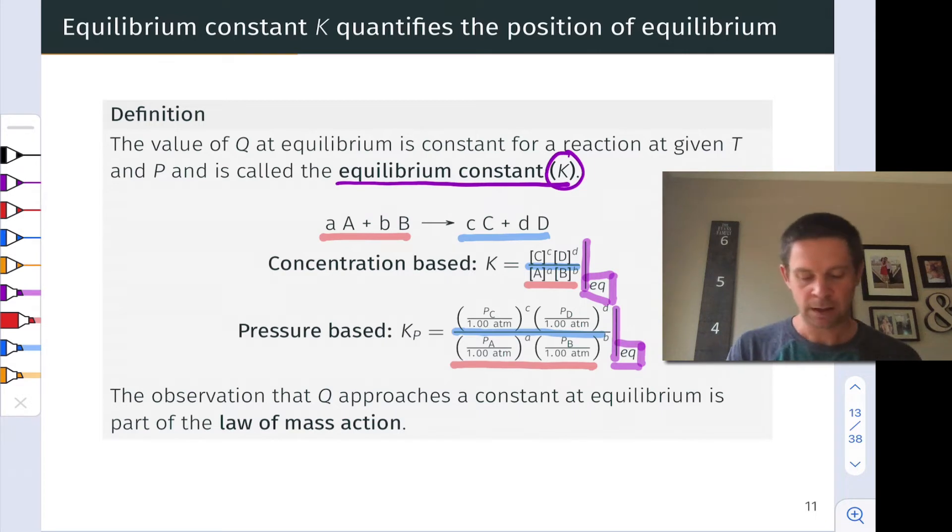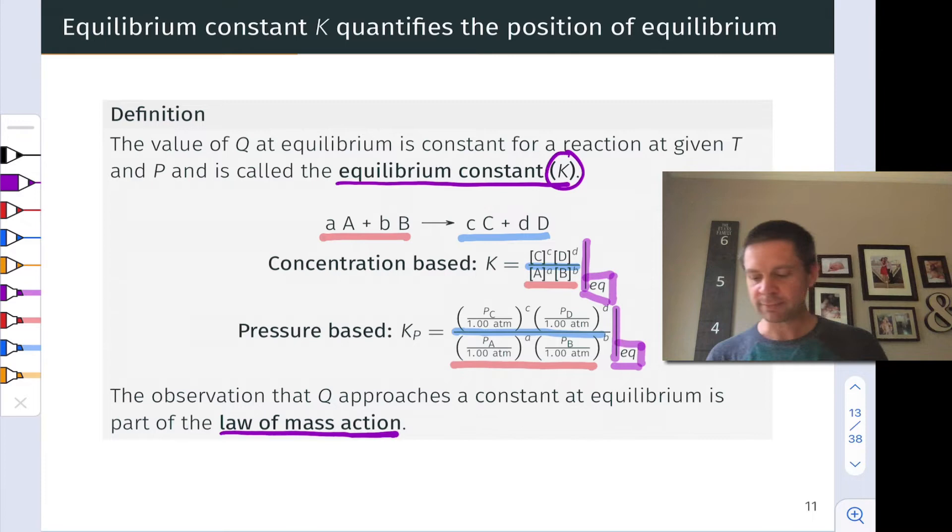This observation that the value of Q approaches a constant value regardless of the initial conditions, a value that's characteristic of the reaction at a specific temperature and pressure, the value K, is known as the law of mass action. And from the law of mass action, we get this kind of weird form of the reaction quotient product concentrations divided by reactant concentrations. We get the stoichiometric coefficient as an exponent and all of that good stuff.